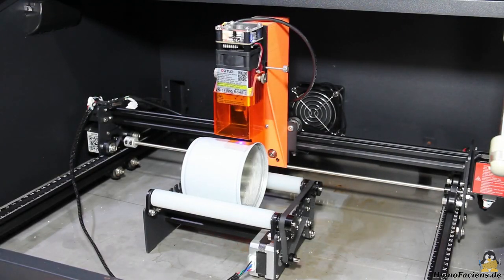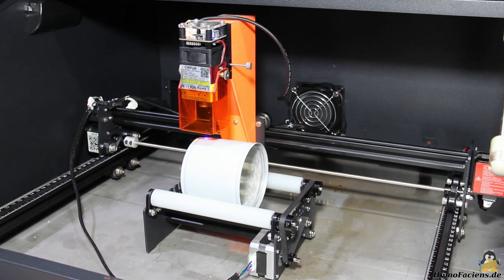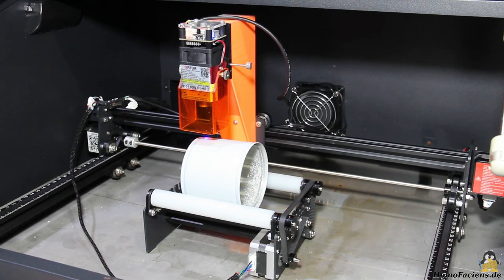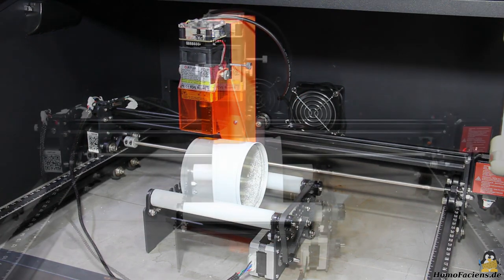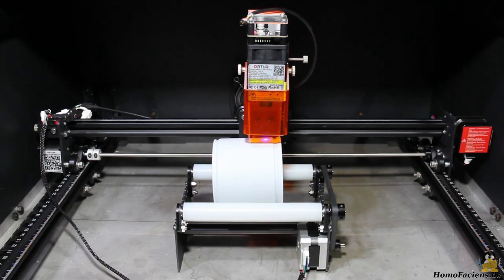The Ortur Laser Master 2 Pro can only engrave flat work pieces, as the laser beam can only be focused on one plane. With the help of an additional module that is available as an extra, cylindrical objects can also be engraved.